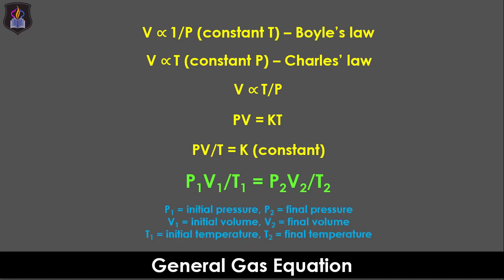We have P1 and P2 as the initial and final pressures respectively, V1 and V2 as the initial and final volumes respectively, and T1 and T2 as the initial and final temperatures in Kelvin.